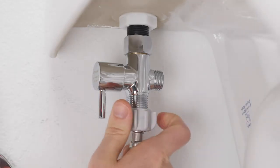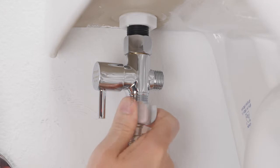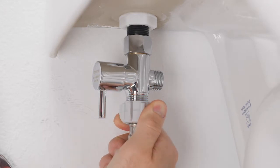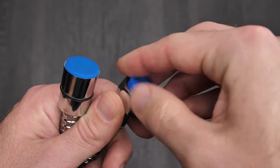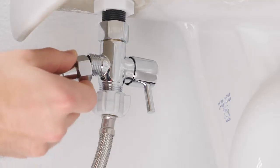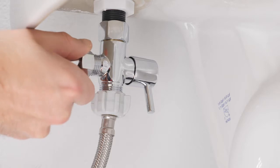Reconnect the flexible supply line to the bottom of the T-valve. Remove the blue caps on the ends of the bidet hose and attach one end of the bidet hose to the open end of the T-valve.